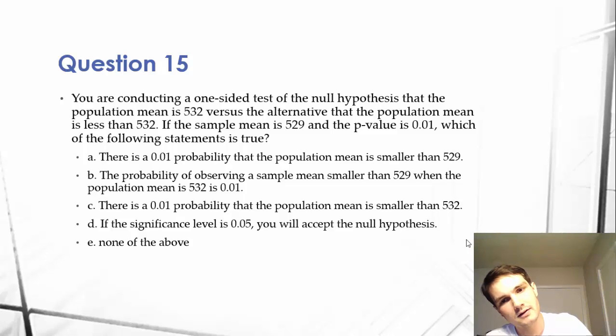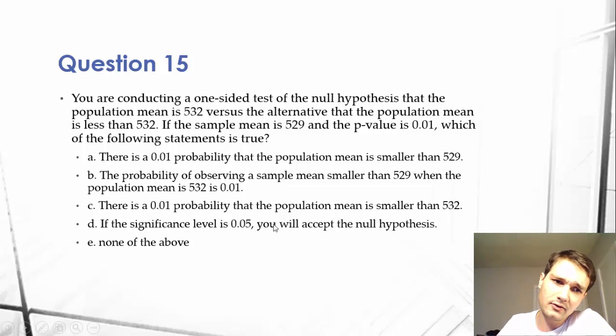The significance level is 0.05 and you will accept the null hypothesis. So I'm going to work backwards here and then we'll find the correct answer. But if we lay everything out, we know D is false, right?